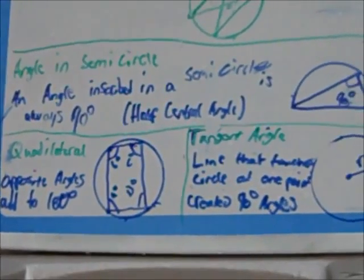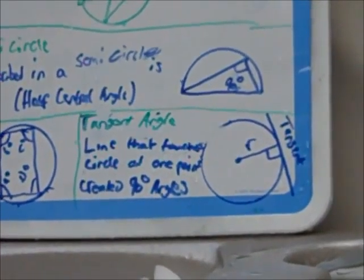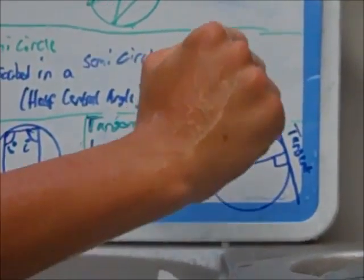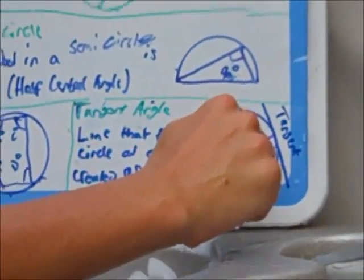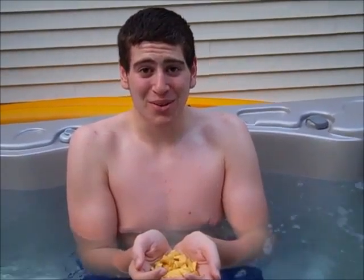And for the last theorem is the tangent angle. The tangent line is a line that touches the circle at one point. This tangent line creates two 90 degree angles from the radius. This was a Boozman Nitties production.